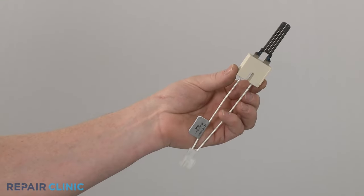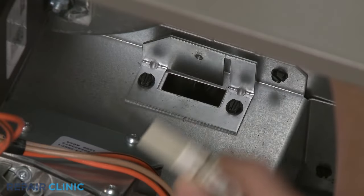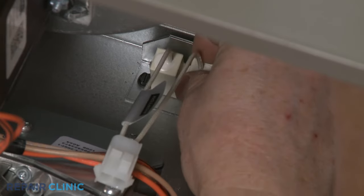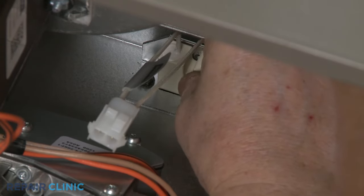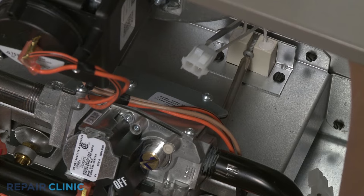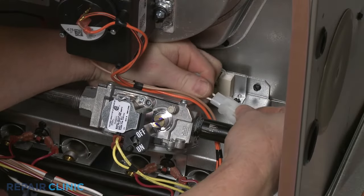When installing a new glow bar style igniter, be careful not to damage the filament as you insert it into the burner housing. Thread and tighten the mounting screw to secure, then connect the wire connector.